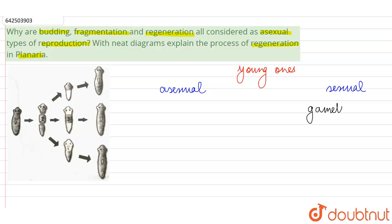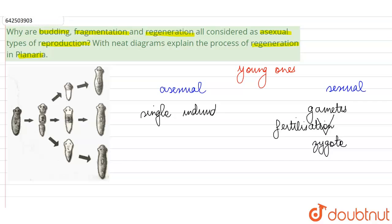The main difference is that in sexual reproduction, haploid cells called gametes fuse together and produce a zygote by the process called fertilization. Whereas in asexual reproduction, a single individual is involved in producing offspring. In sexual reproduction, both gametes come from two different parents — one male and one female.